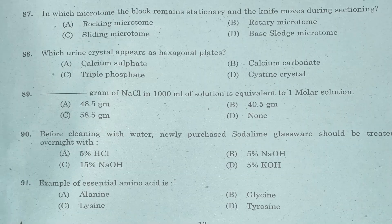Question 87: In which microtome does the block remain stationary and the knife moves during sectioning? Option A: rocking microtome. Option B: rotary microtome. Option C: sliding microtome. Option D: base sledge microtome. Answer is Option C, sliding microtome.